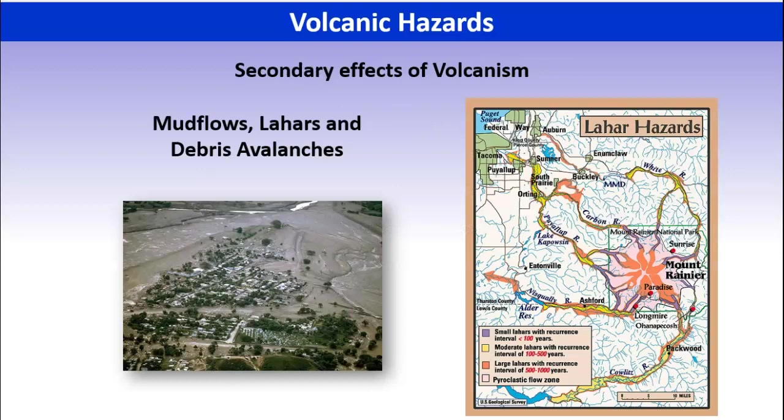The next thing we talk about are what are called lahars, or just avalanches. We have a steep feature, associating more with our strato and intermediate-type volcanoes because they are steep-sided. We can have avalanches just because of instability and steep slopes, but we also get what are called lahars, which are basically volcanic mud flows. These can happen for a variety of reasons.